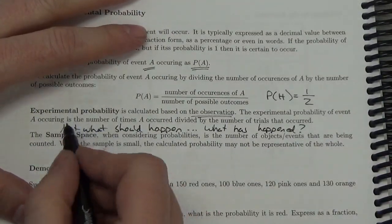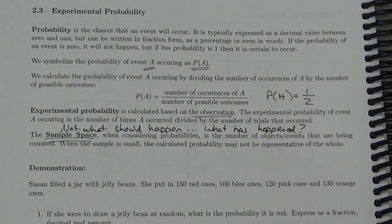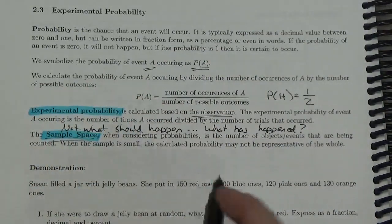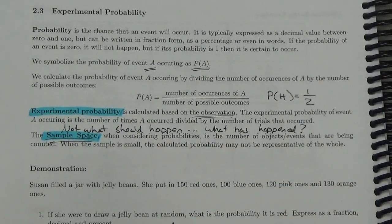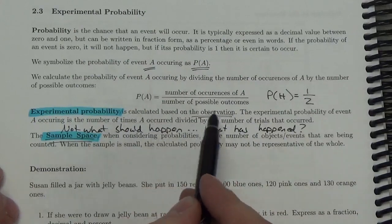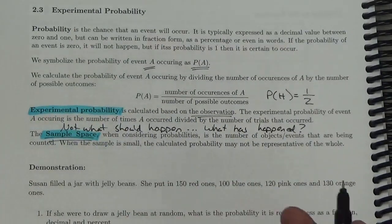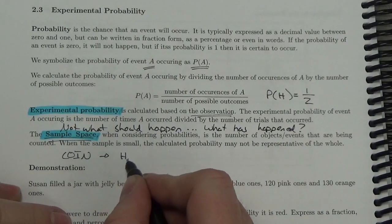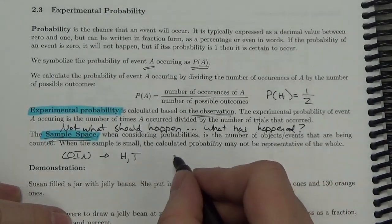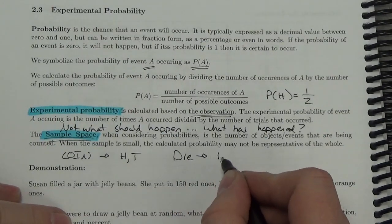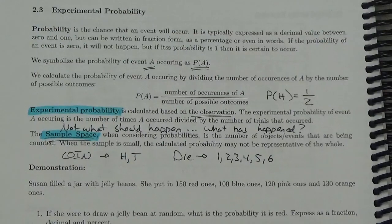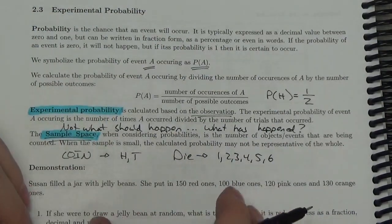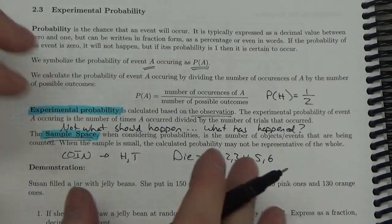The sample space — just a little vocabulary here — is the number of objects or events that are being counted. When we talk about the number of possible outcomes, the sample space is the set of outcomes. For example, when dealing with a coin, your sample space is heads and tails. If you're talking about a die, your sample space is 1, 2, 3, 4, 5, 6 for a regular 6-sided die. The sample space is the collection of all possible outcomes in a particular experiment. Let's take a look at some questions.